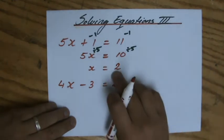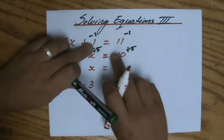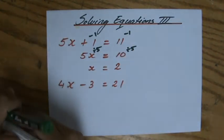And then 10 divided by 5 is 2. I can always check my work. See if I'm right: 5 times 2, and 5 times x, 5 times 2 is 10 plus 1 is 11, and indeed that's what it says. Good.